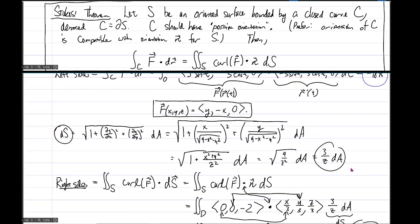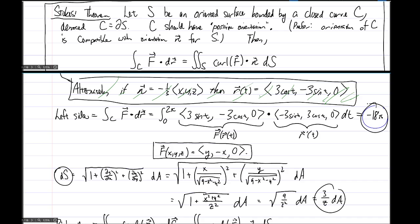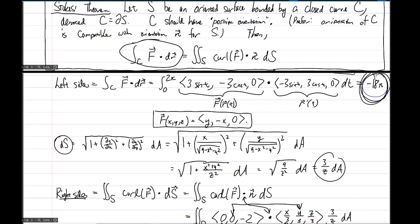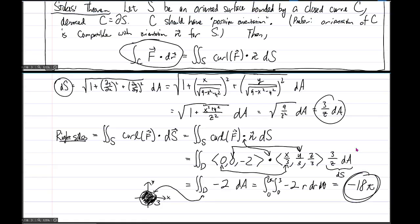That is good, because it matches the negative 18 pi we computed there. So this negative 18 pi is the left side of Stokes' theorem, and then this negative 18 pi is the right side of Stokes' theorem.